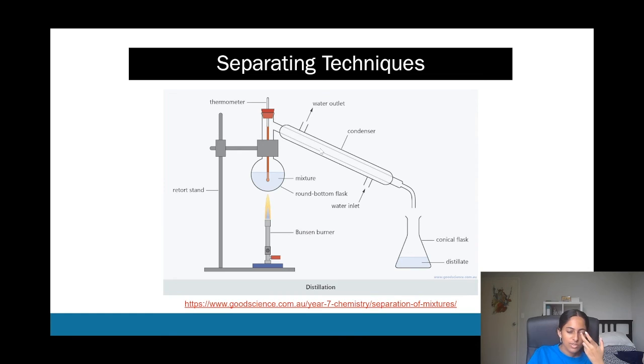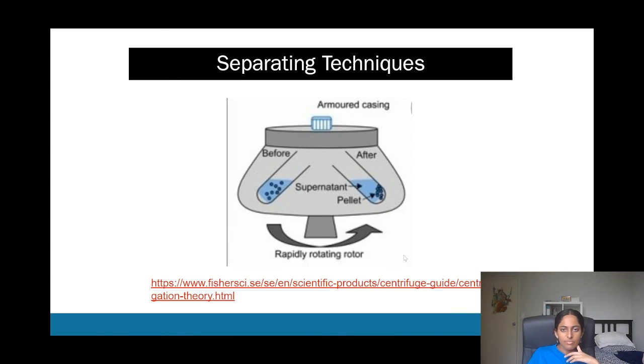Or you can also distill things. So, like I said, that's through boiling point and you use something called a condenser and you have water being used as well because water helps to cool down the condenser as well as the liquid is passing through. And this is also what a centrifuge looks like.